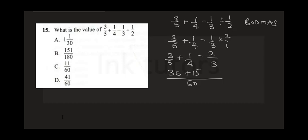60 into 3 is 20; 20 times 2 is 40. So we have 36 plus 15 equals 51, and 51 minus 40 gives us 11 over 60. The correct answer is C.